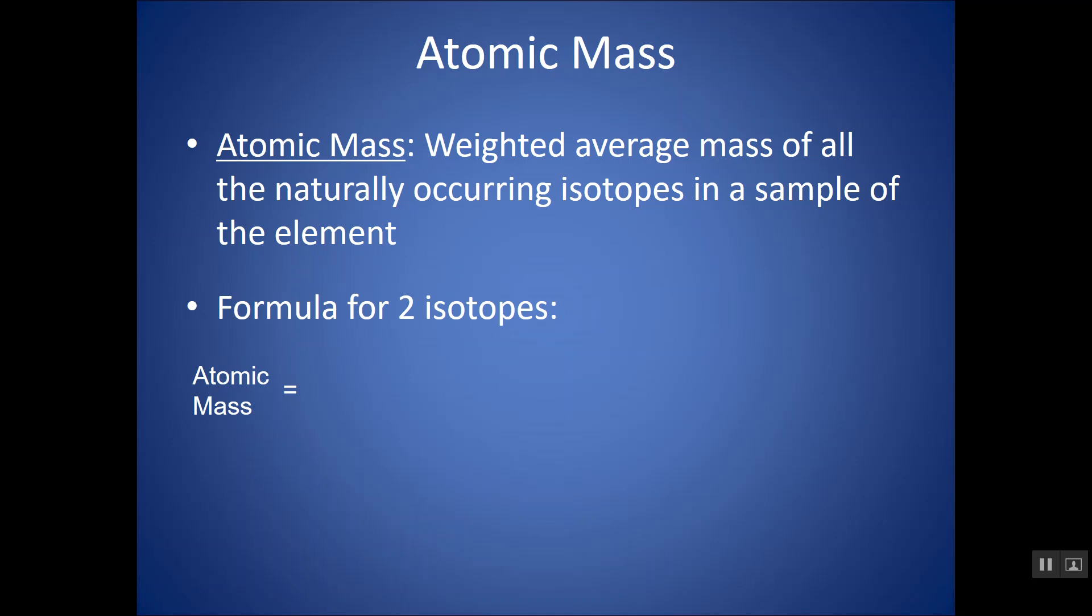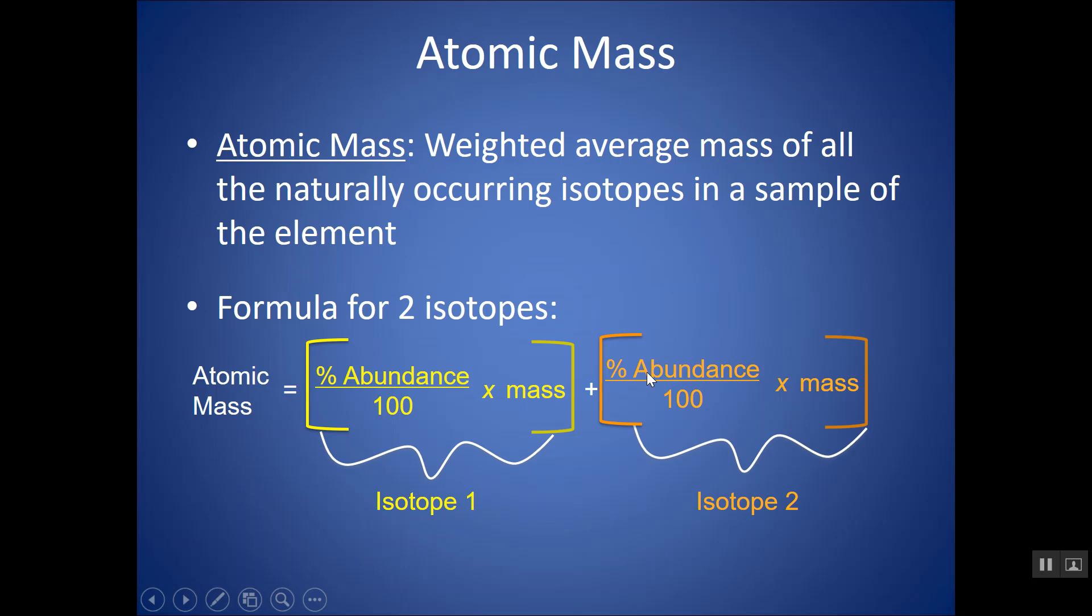So it basically considers all the possible mass numbers for that particular element and is a weighted average of them. So there's a formula that you should know. The atomic mass equals the percent abundance over 100 times the mass of the isotope. And then you do that for each of the naturally occurring isotopes that exist. So let's say there's two isotopes that exist for that particular element. You would do that again for isotope 2.